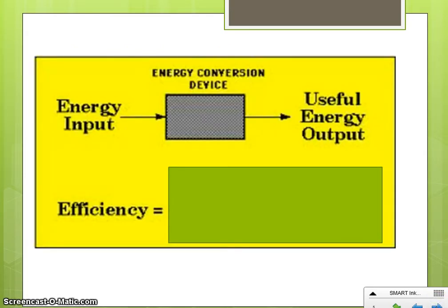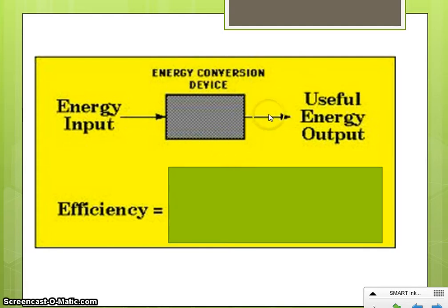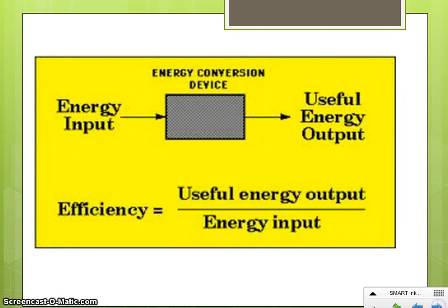When figuring out efficiency, there are a couple of key ideas. First, your energy input — in the car example, that was all the gasoline we put in that we wanted to use to get from one place to another. Then you have your energy conversion device — the device that changes energy from one type to another, which in our example is the car. Finally, you have your useful energy output — how much of the energy we put in was actually useful, which in our example was only 25%. The equation for efficiency is: useful energy output divided by energy input. We wanted to use 100 gallons, but only 25 were used to move the car, so 25 divided by 100 equals 0.25, which means the car is 25% efficient.